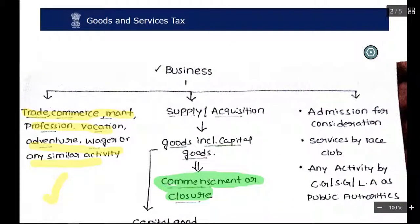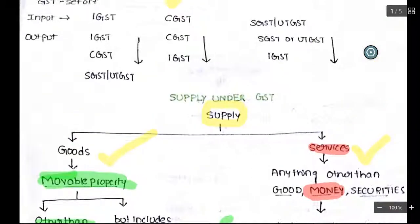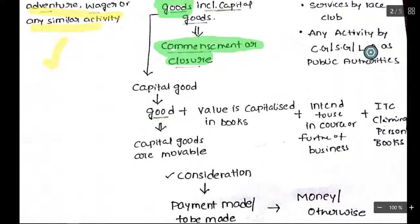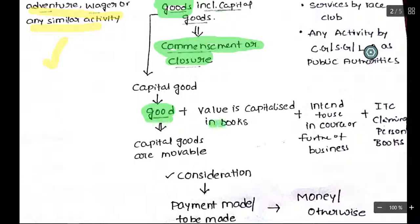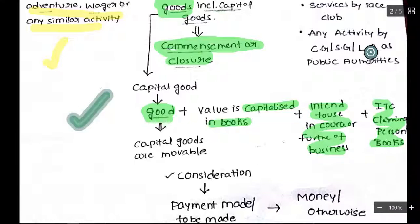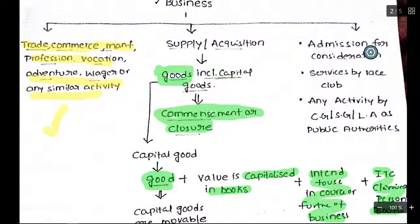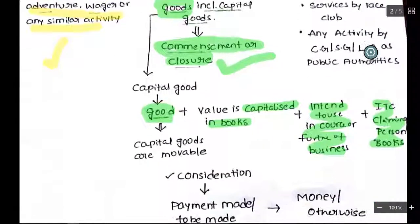Goods can be classified as normal goods and capital goods. Capital goods are goods which are capitalized in the books of accounts, intended to be used in the course or furtherance of business, and with respect to which ITC is claimed. Simply put, these goods are not for sale — they are intended for business use to produce output, and their value is shown on the asset side of the balance sheet. If there is any permanent transfer or disposal of business assets at the time of commencement or closure of business, GST needs to be levied.